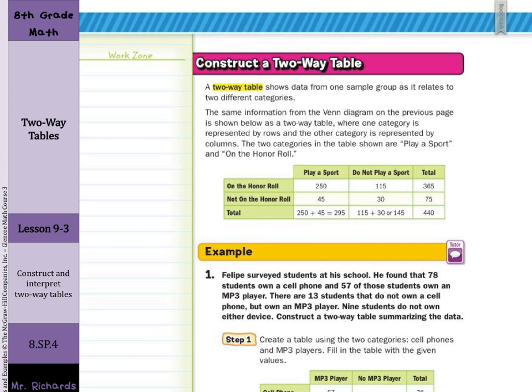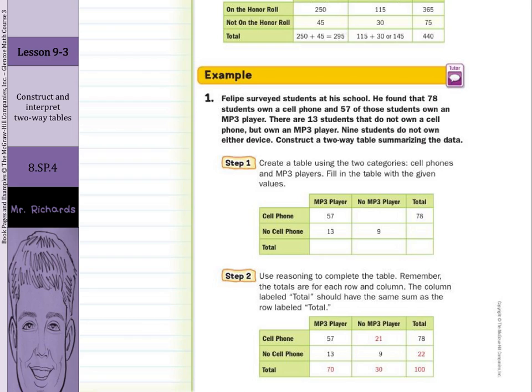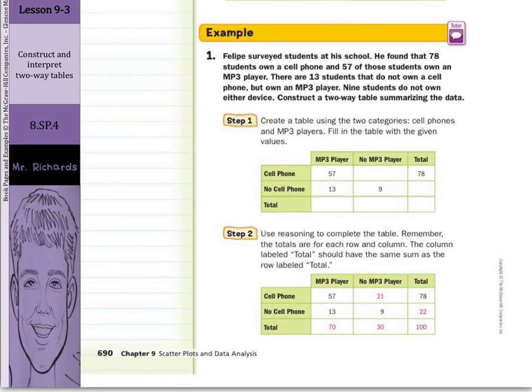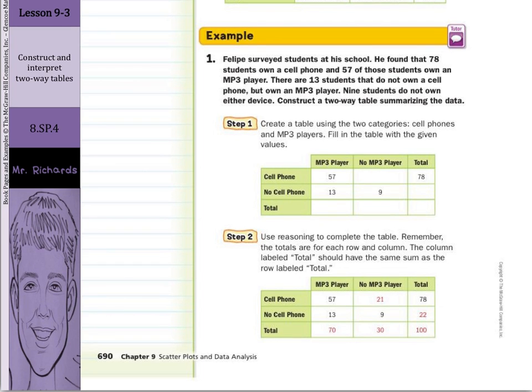So as we look at our first guided example, Philippe surveyed students at his school. He found that 78 students own a cell phone and 57 of those own an MP3 player. There are 13 students that do not own a cell phone but own an MP3 player. Nine students do not own either device. Construct a two-way table summarizing the data. Step one, create a table using the two categories. Cell phones are here and MP3 players are here. Fill in the table with the given values.